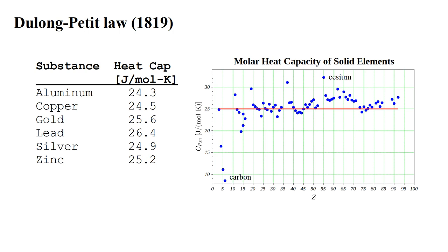The plot at right shows molar heat capacity versus atomic number Z for most of the elements which are solids at room temperature. The great majority of these values were unknown at the time of Dulong and Petit. Still, we see that, roughly speaking, the values do tend to cluster about the Dulong-Petit value, indicated by the horizontal red line.